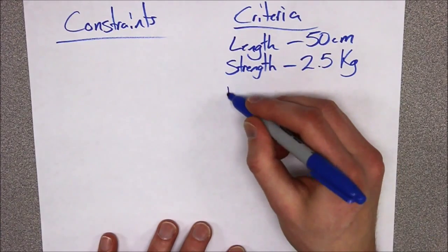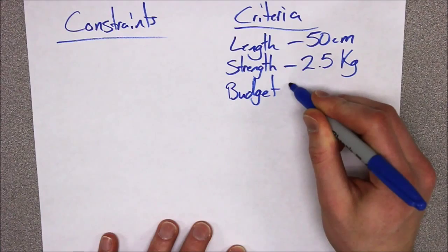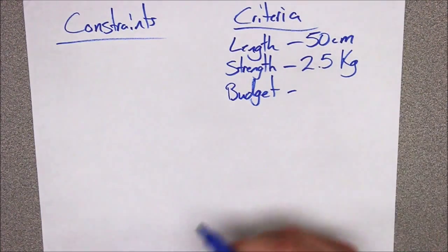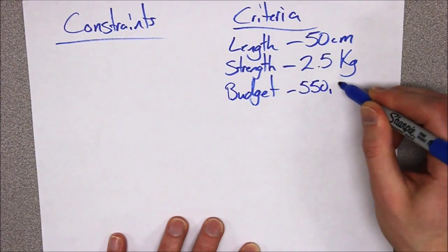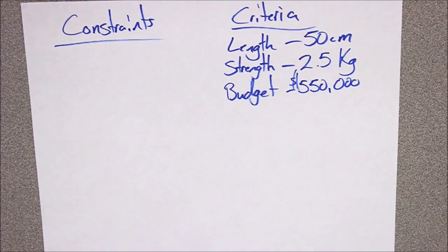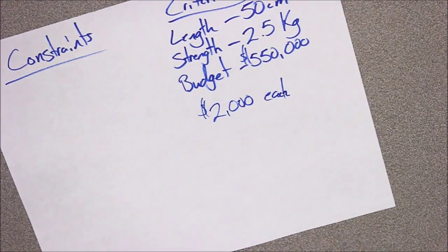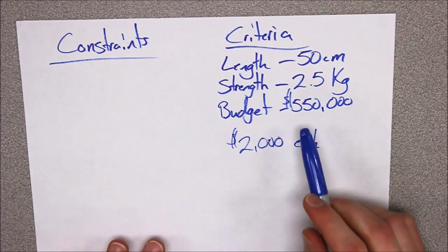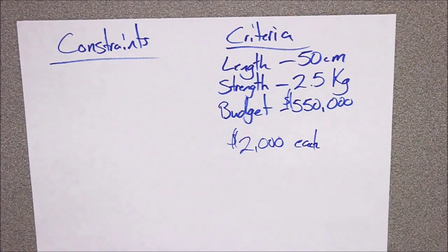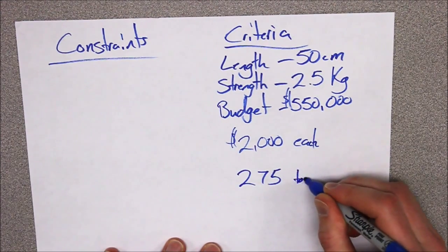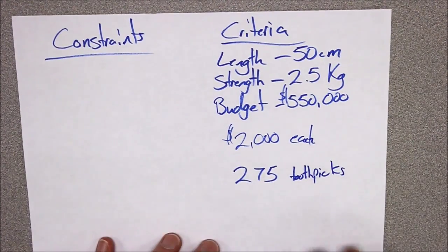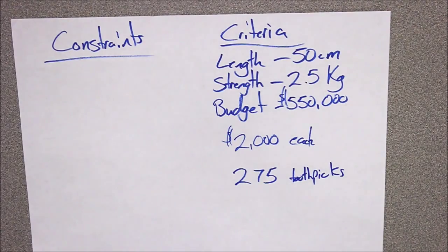So we have length, strength, and the last criteria was to be under budget. The budget they had to stay under was $550,000. That might seem like a lot or very little when it comes to actual bridges, but it all depends on the price of the material. For this year, it is $2,000 for each toothpick, which means I have the potential to use 275 toothpicks — that is the maximum I can use. I cannot use a single more or I will go over budget.